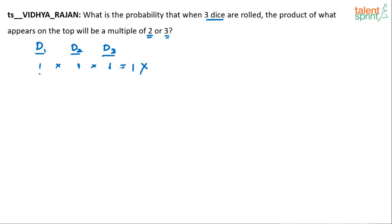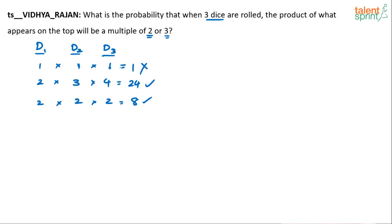Let's say if the numbers are 2, 3, and 4. What is the product? 2 into 3 into 4 — so 2 into 3 is 6, 6 into 4 is 24. Is this right or wrong? It is right because 24 is a multiple of 2 as well as 3. Now let's say if you get 2, 2, and 2 — the product is 8. Is 8 a multiple of 2 or 3? Yes, it's a multiple of 2. It need not be a multiple of both — either 2 or 3 or both.